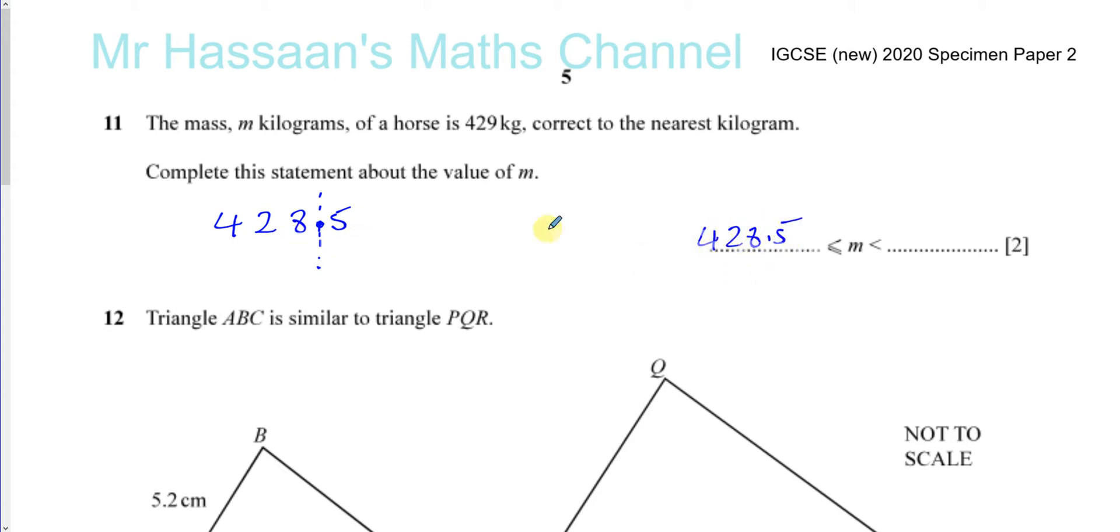It can't go any lower than that because if it was 428.4, even 428.499, if you round that, it gives you 428. If you round that to the nearest kilogram, it gives you 428. So that's the lowest it could have been before it was rounded.